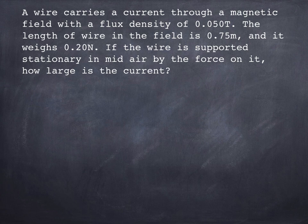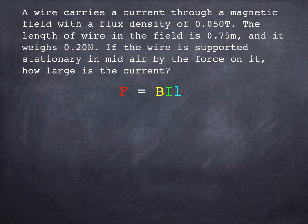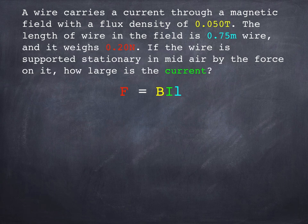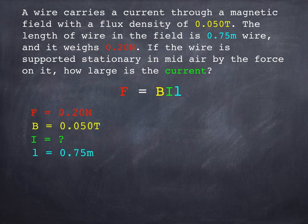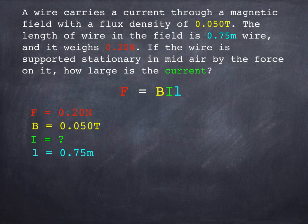Now obviously we're going to need this equation here, F equals BIl. What I would recommend you do is use a highlighter or just underline the key bits of information in the question. I've color coded this to make it stand out nice and simply. Once you've identified the key bits of information, I would write down the different quantities in the equation and the values for each one.